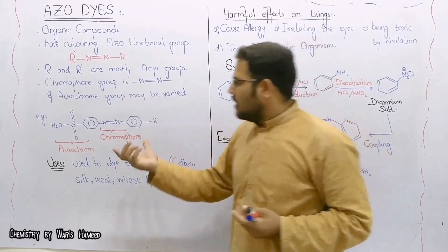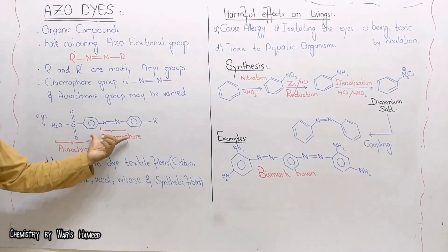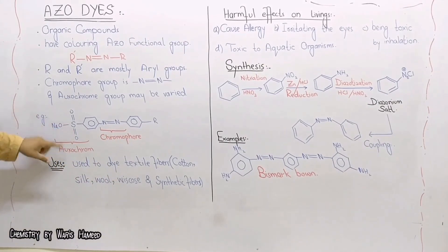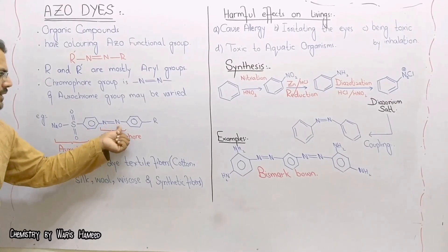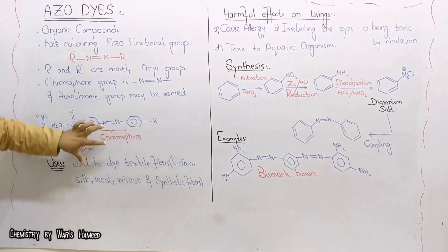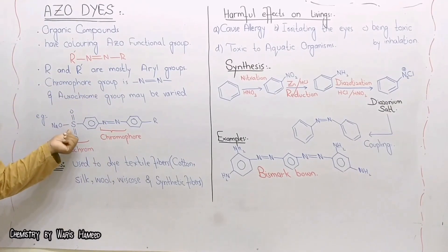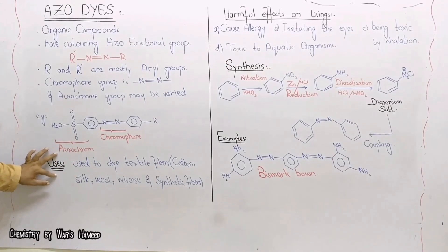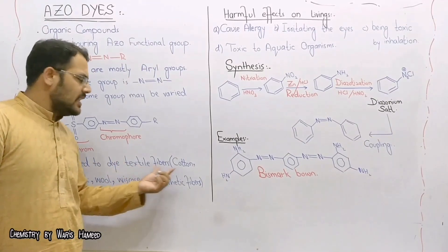The auxochrome group may vary according to the dye and its type. For example, in one dye, SO3 is an alkyl group, a benzene ring is attached with N=N, and another benzene ring is attached with the R group (alkyl group). In this case, N=N is the chromophore, and the sulfate group (SO3) is the auxochrome.